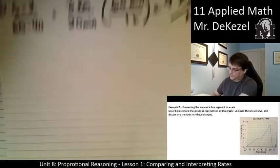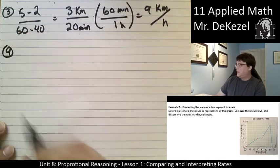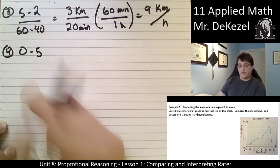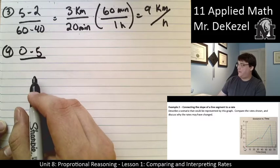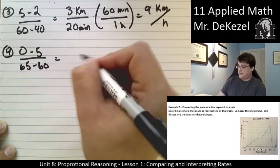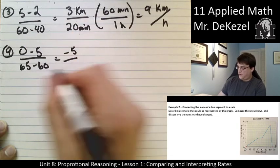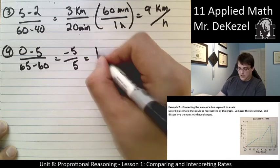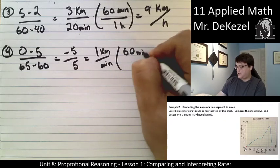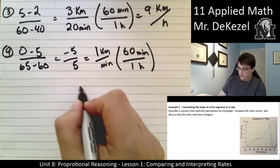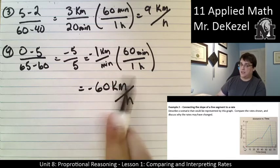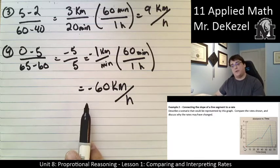For the fourth section, they go from 5 to 0 kilometers. y2 is 0 and y1 is 5, so 0 minus 5. The time goes from 60 to 65 minutes, so 65 minus 60 equals 5 minutes. That gives minus 5 over 5, which is minus 1 kilometer per minute. Converting with 60 minutes per hour gives negative 60 kilometers per hour — so they were moving back the other way, likely in a vehicle.